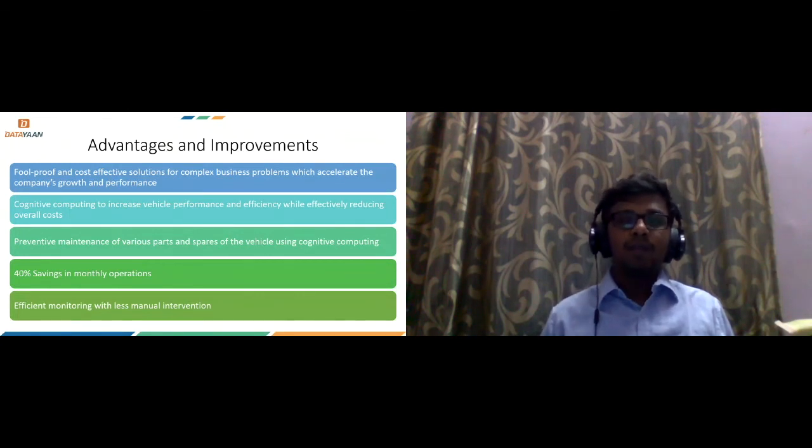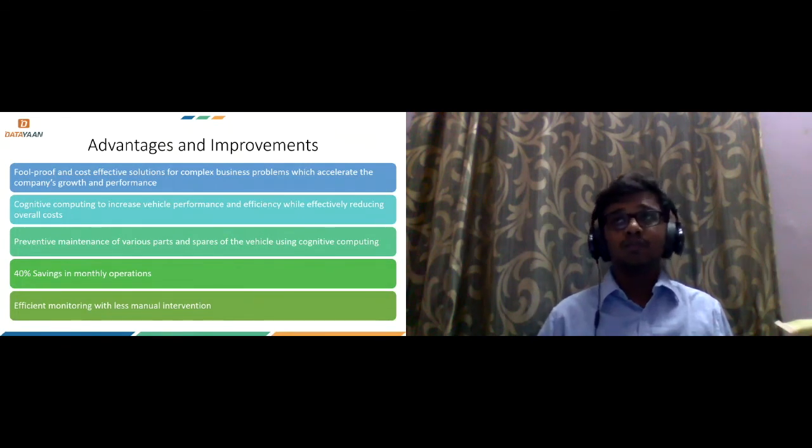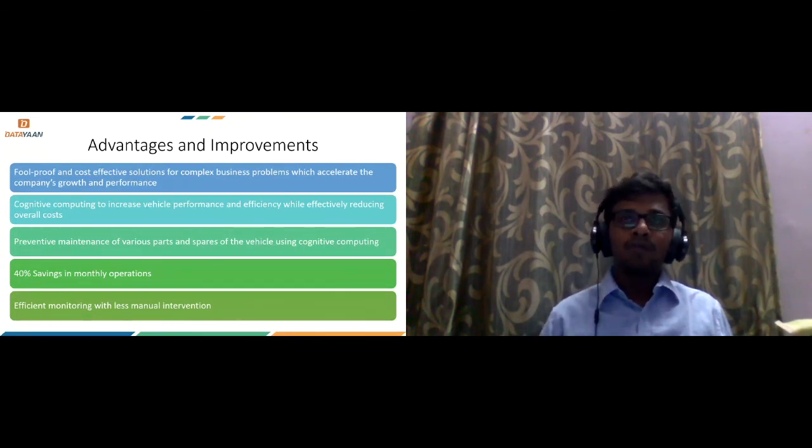And then we have preventive maintenance where we say this part is about to reach the end of life and we'll need to switch it before the next trip. And when we do all this, we can see about 40% savings in their monthly operations because we are future-sighted and we don't react to a problem. We have a proactive way of telling where the problem might be and how we can fix it beforehand itself. So that is the main part where we get the savings.